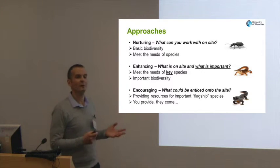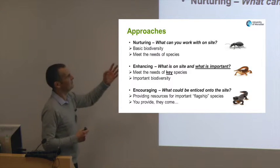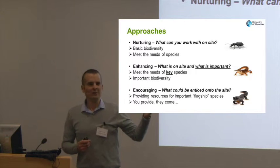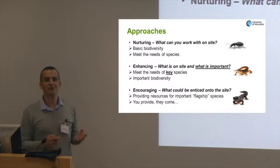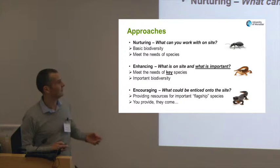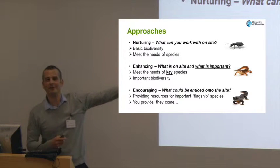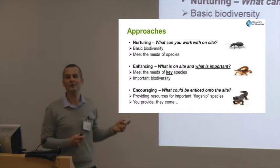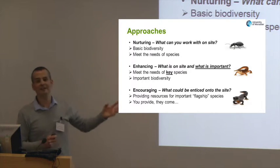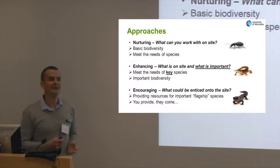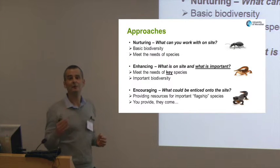There are three kinds of approaches which you can consider for your own sites. The first one is really nurturing — it's what's already there on site, but you don't really need to know what those actual species are. Now on every site I can guarantee you there will be some beetles. Not very charismatic, but this is your basics of biodiversity and it's quite easy — I'll show shortly how you can meet the needs of these very basic species. So this is all about nurturing.